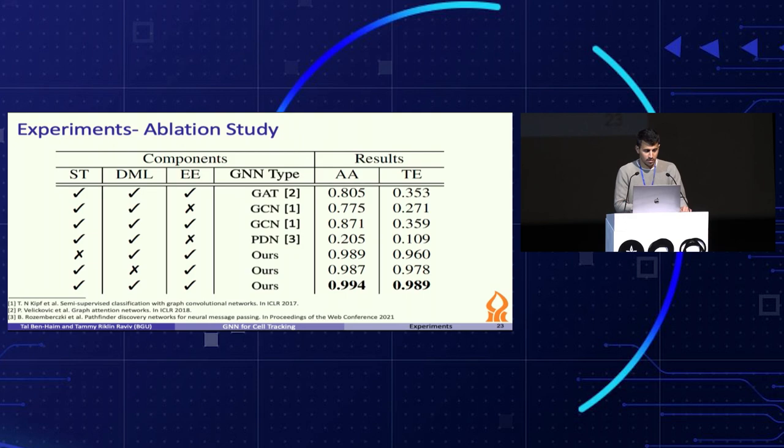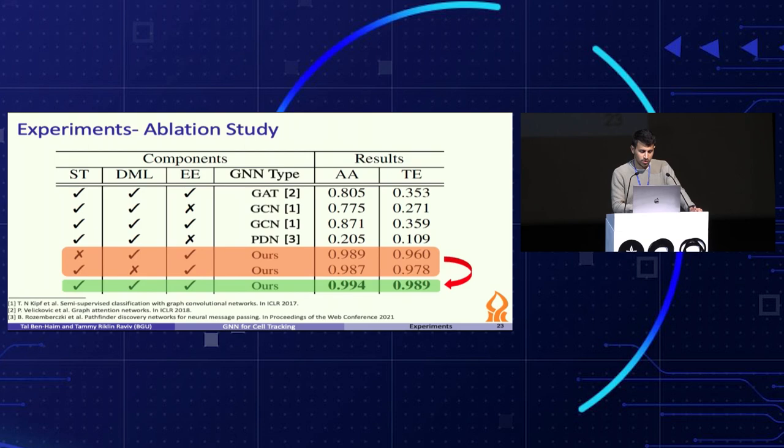Finally, we conducted an ablation study to illustrate the contribution of each component in our model to the obtained tracking result. The first column represents the contribution of spatial temporal features. The second column corresponds to the learned features. The third one is the proposed encoder in the message passing scheme. And the last emphasizes our contribution in comparison to various message passing methods. The last two columns represent the results. In the first three rows, we give a comparison to two popular methods of message passing: Graph Convolutional and Graph Attention Network. We show that the proposed message passing is indeed better for our problem. In addition, the proposed encoder improved the results. The last few rows illustrate the contribution of each feature type that we use. We can observe that the model containing all components achieved the best performance.